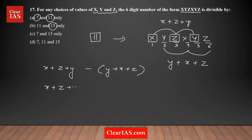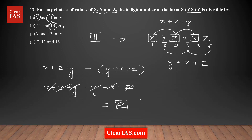Expanding the difference: x + z + y minus y minus x minus z. So x cancels, y cancels, and z cancels, giving a final difference of 0. Is 0 a multiple of 11? Yes — 0 is a multiple of any number. So the difference is 0, which is still a multiple of 11.